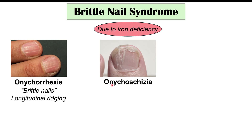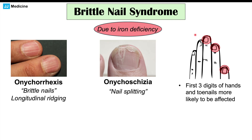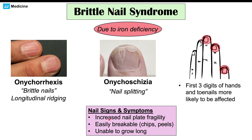We can also see something called onychoschizia, which is essentially nail splitting — large chunks of nail splitting apart. This can all occur with brittle nail syndrome in patients with celiac disease. The first three digits of the hands are most commonly affected: the thumb, index finger, and middle finger, and the toenails are also more likely to be affected. Overall, brittle nail syndrome results in increased nail plate fragility — the nails are more brittle and more easily breakable.